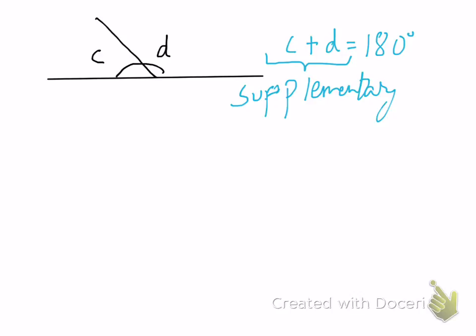And by the way, there could be two, there could be more than two, there could be three, four, five. Basically if they're adding up to 180 degrees they're supplementary and if they're adding up to 90 degrees they are complementary.